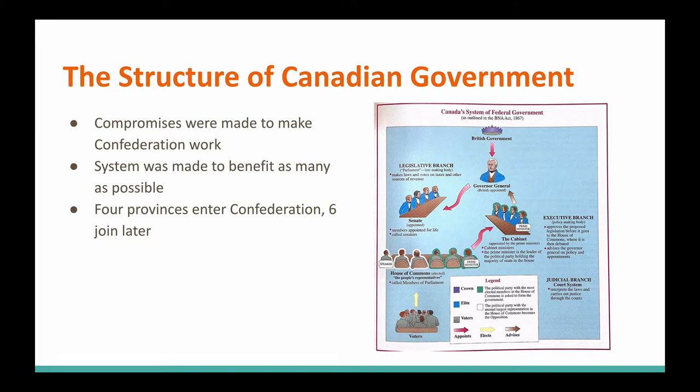There's an image here showing the system of federal government from the BNA Act of 1867, which we learned about in the last chapter. You can see that the British government is still at the top. The British government still played a very important role during Canada's early history, and today they do still play a role. We have a Governor General — no longer appointed by the British; the Prime Minister now appoints the Governor General, who represents the monarch. It really is just a symbolic position.